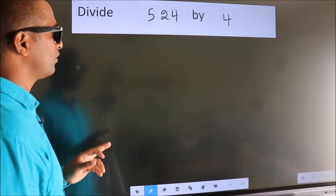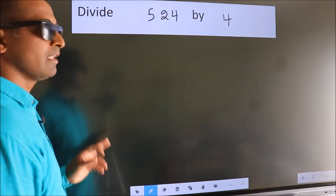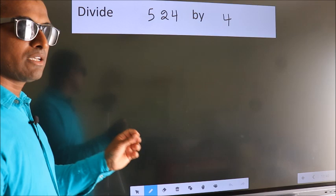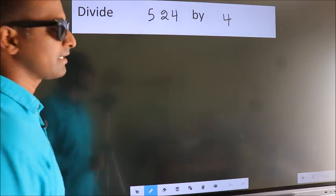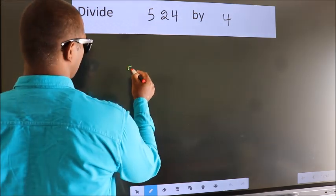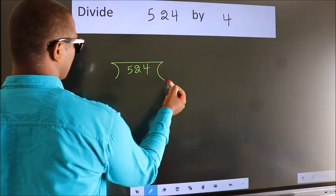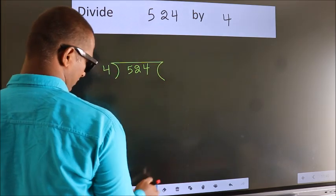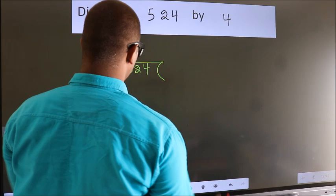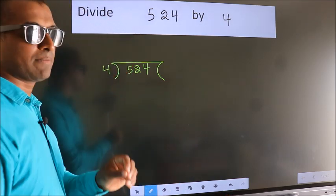Divide 524 by 4. To do this division, we should frame it in this way: 524 here, 4 here. This is your step 1.